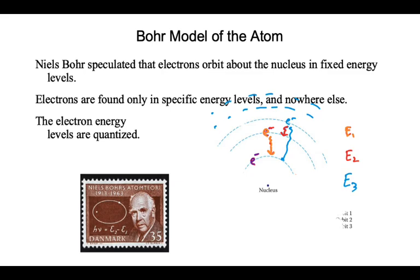What color would you expect for the transition from a very high energy level all the way down? Ultraviolet — outside the visible range. I can't see it, but it still happens. So when we're talking about the emission spectrum, it's just what we can see. There are certain jumps and transitions our eyes can acknowledge, and other jumps that still happen but we can't see them.